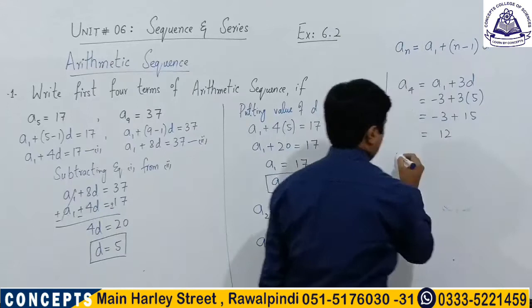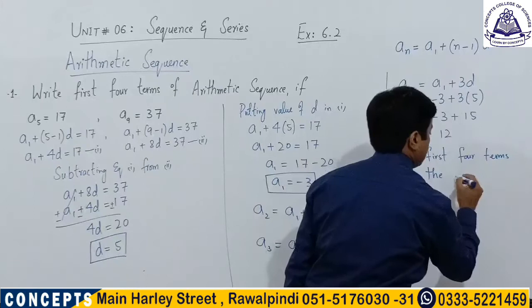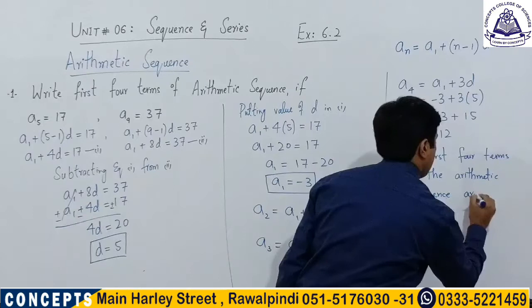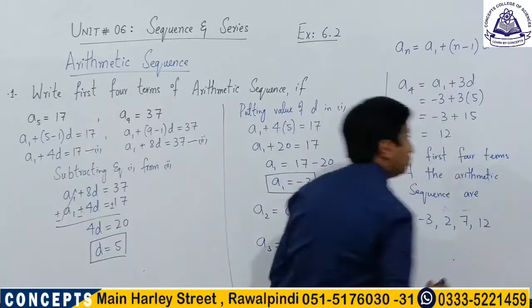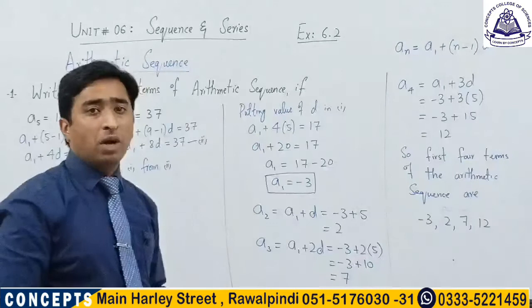So the first four terms of this sequence are −3, 2, 7 and 12. By this question you have learned that if you know any two terms of a sequence, you can find any other term of that sequence. Let's move to another question.